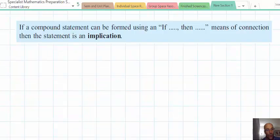So students, formally we have what you see on your screen. If a compound statement can be formed using an if-then method of connection, we call that statement, that compound statement, an implication. Well, let's see how the truth table pans out with two statements in a compound statement bound together by the connective of implication.